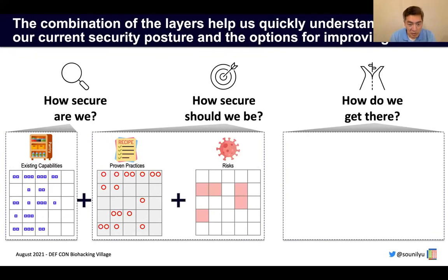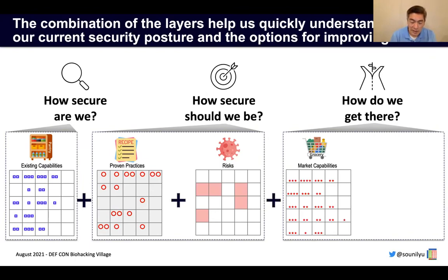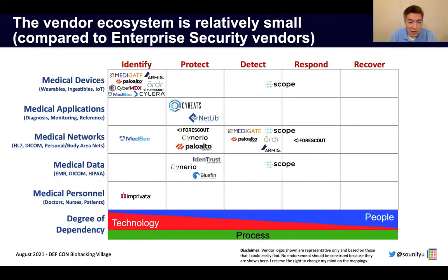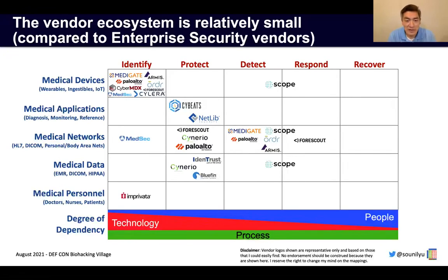If you're not familiar with the Cyber Analytic Repository or CAR at car.mitre.org, it also provides the analytic approach and logic to look for these attacks within one's environment. What I've done here is map each of those different types of information to the different asset classes within the Cyber Defense Matrix. That maps the attack surfaces and the risks in our environment to characterize how secure we should be. Lastly, we want to understand how do we get there — so let's look at market capabilities. I tried to find vendors specialized towards the healthcare market, and it seems relatively small.